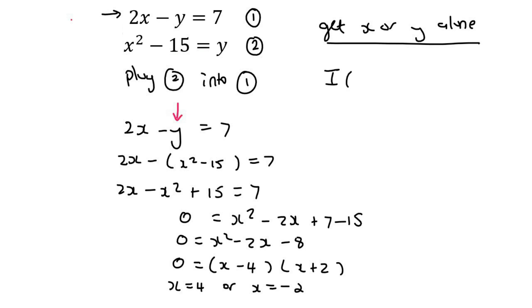If x equals 4, let me do that in a different color. Then we use this equation over here. It tells us that y should equal 4 squared minus 15. I'm just plugging the x answer into here, and so that means y would be 1.